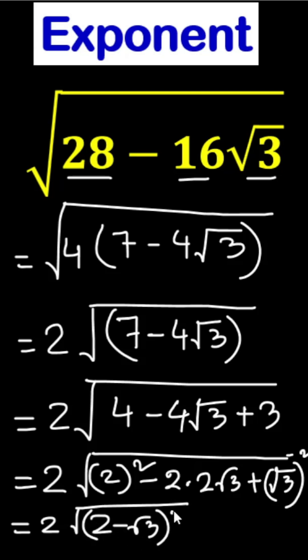Finally we will get 2 times the square root of 2 minus root 3 squared. The square root and the square cancel, so we get 2 times 2 minus root 3, and this is our answer. Thank you.